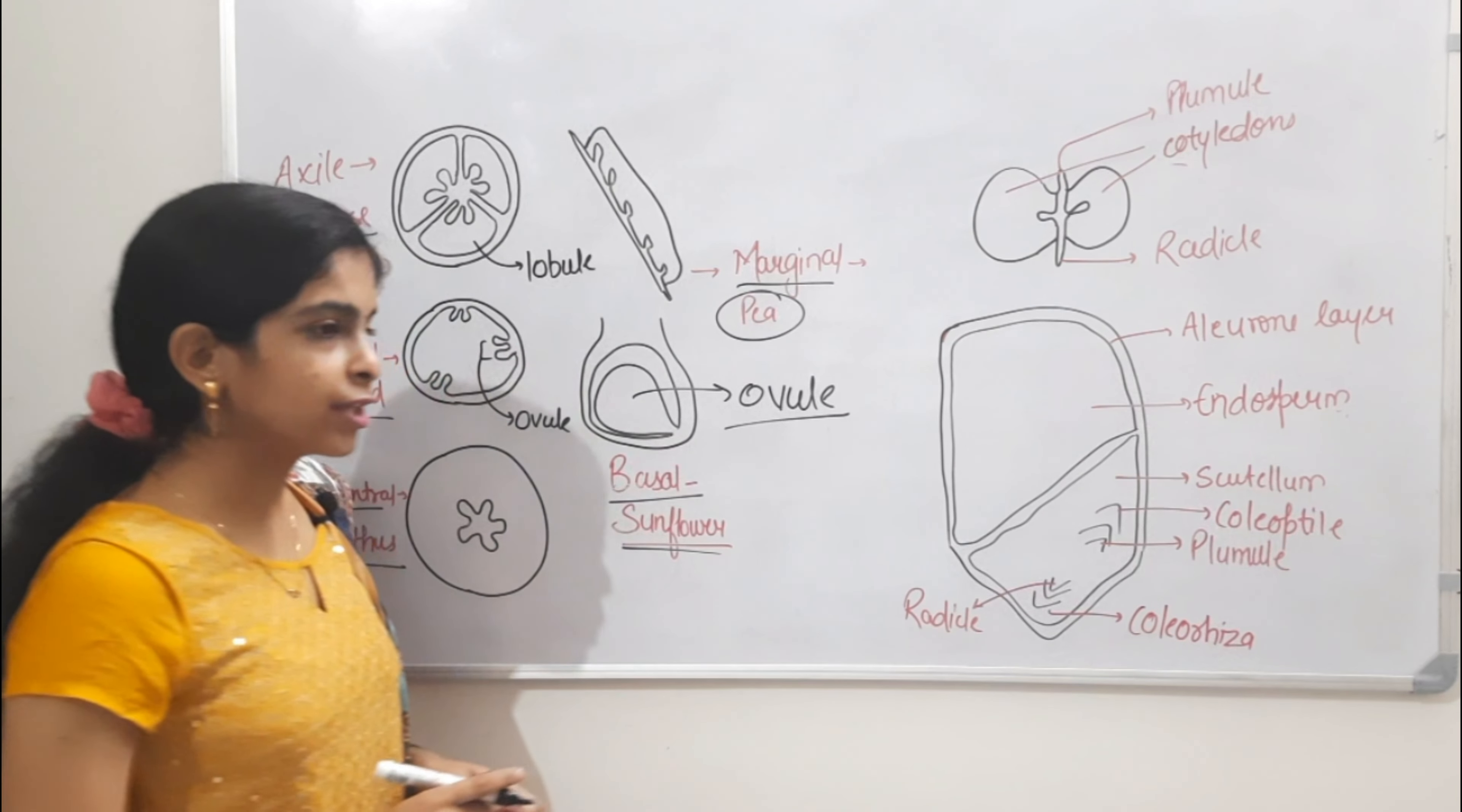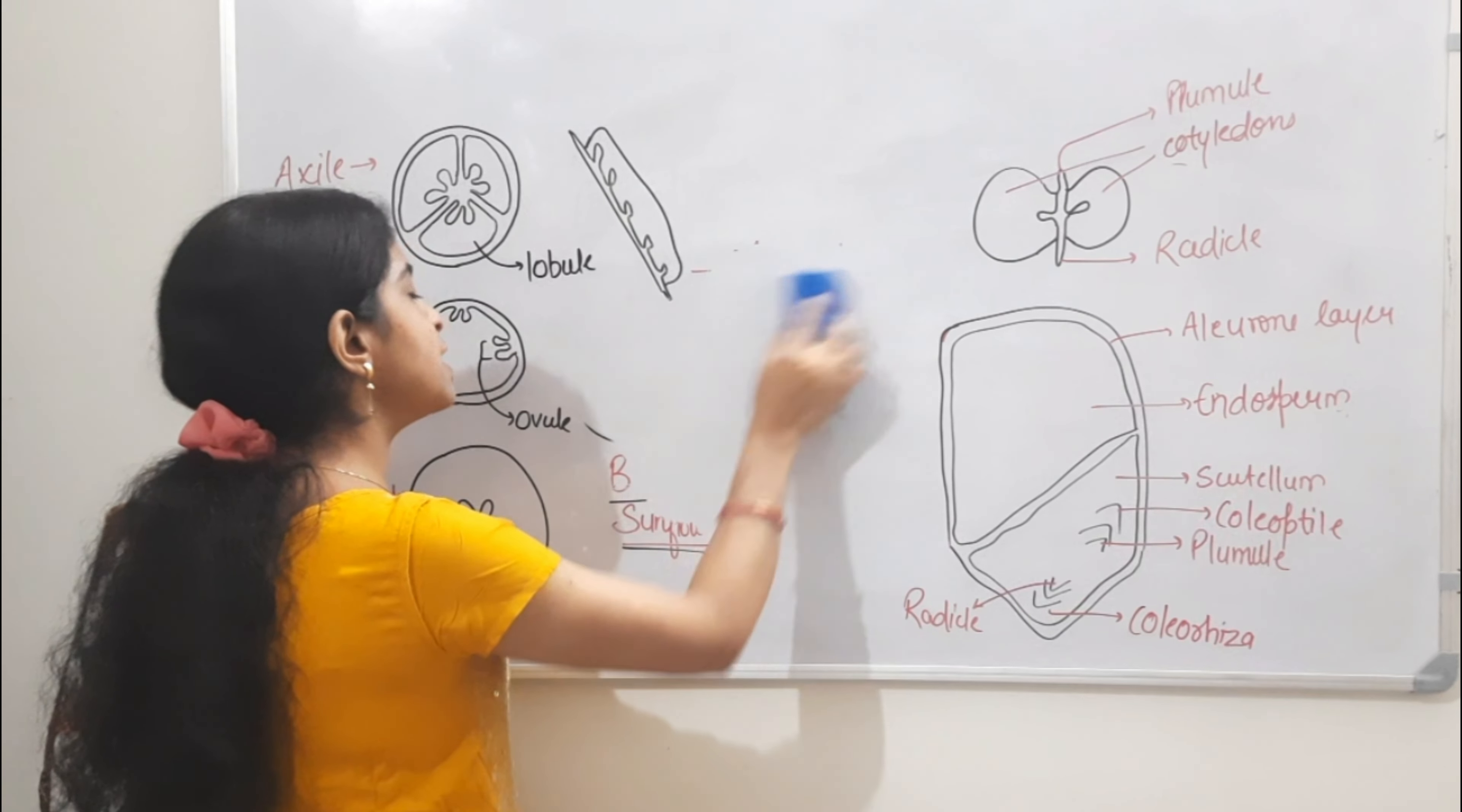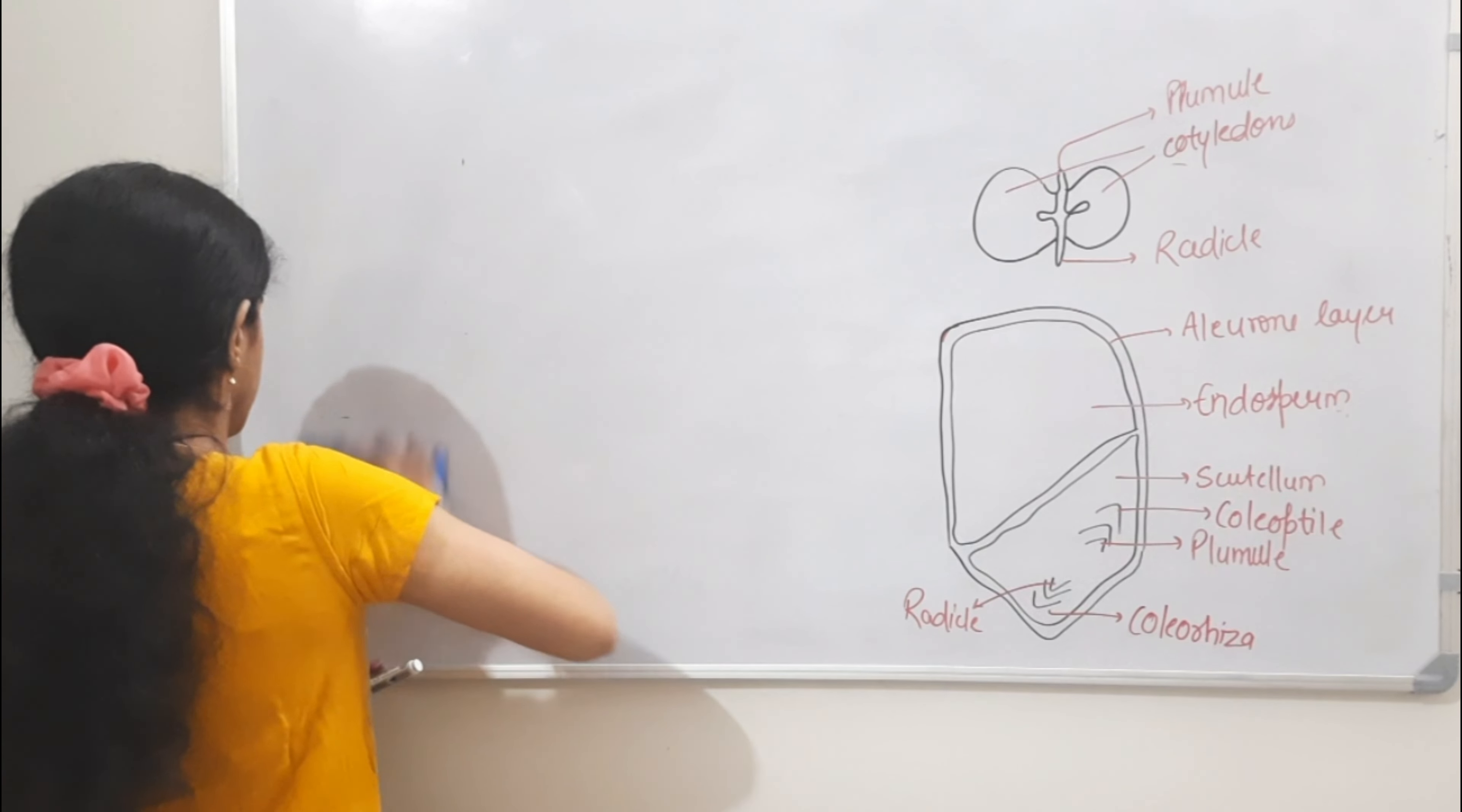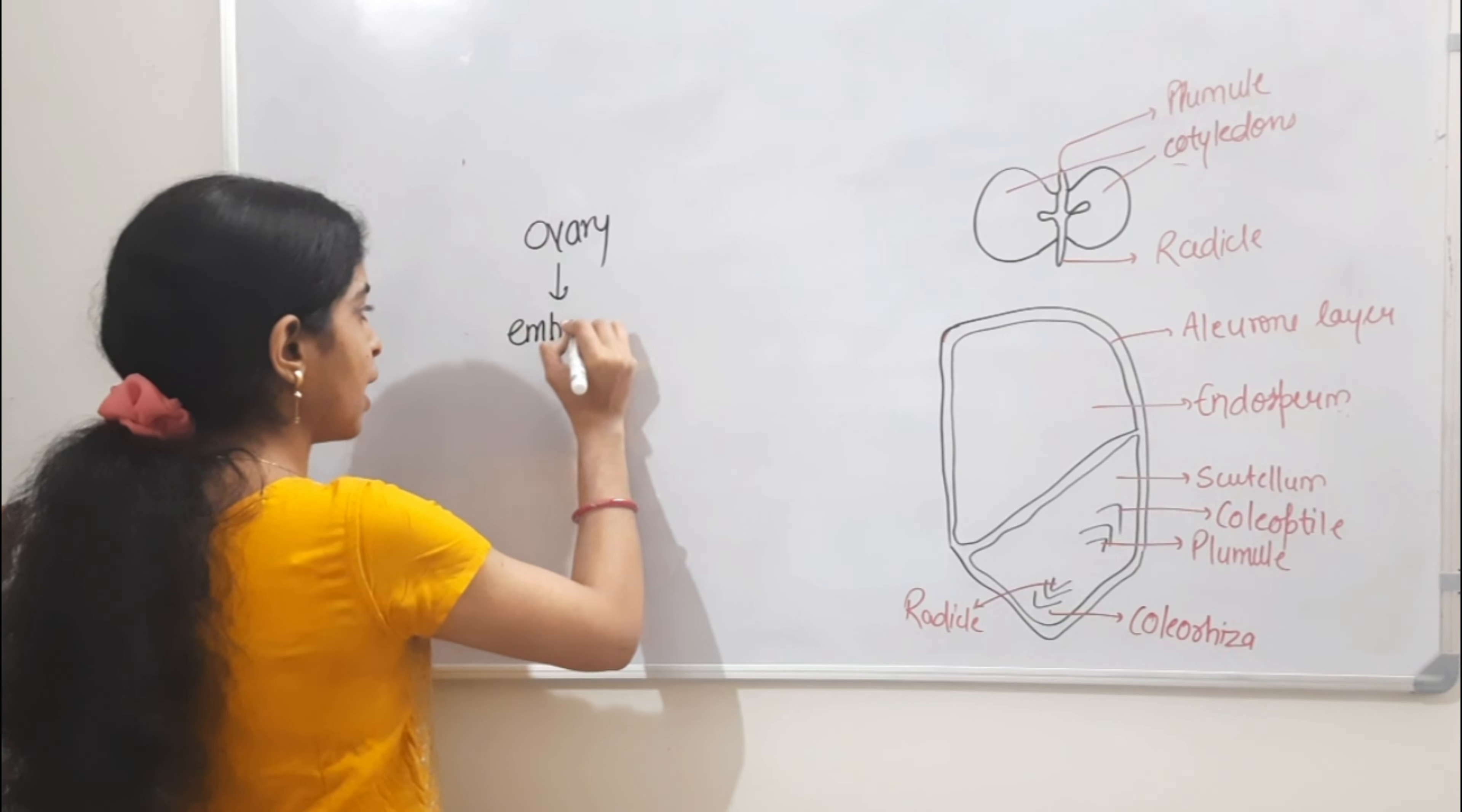Now it comes to fruit. What is fruit? Ovary develops into fruit. What is ovary? It's the embryo sac.